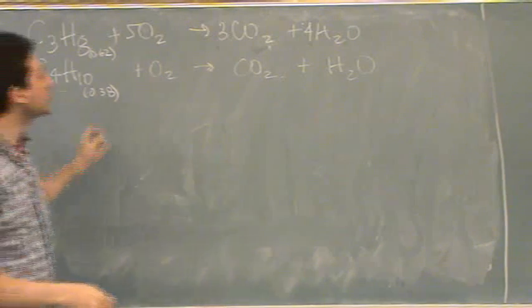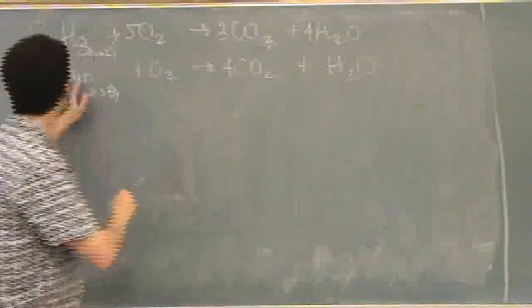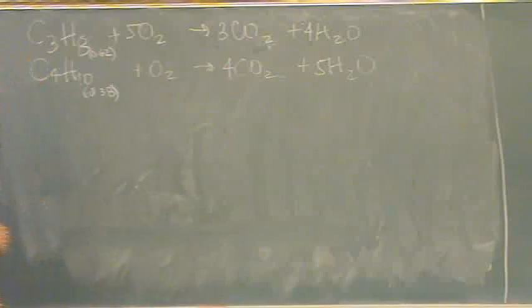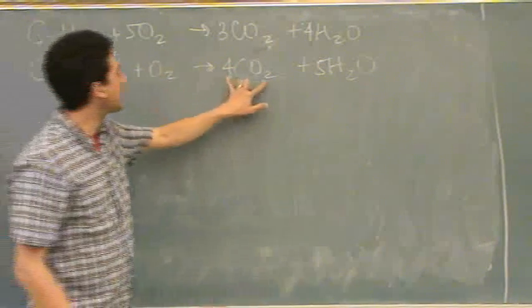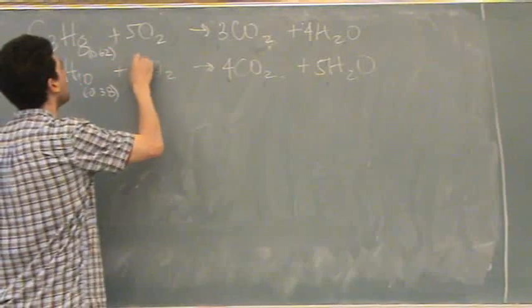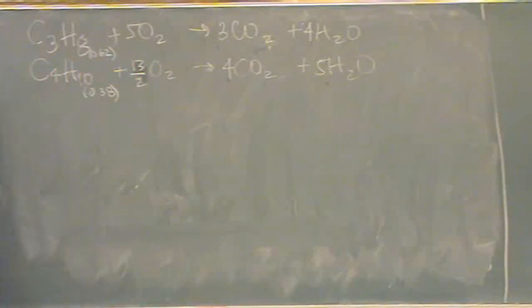Now, this is the second one. There's 4 carbons here, so put 4 here. 10 hydrogens, so we've got to put a 5 there. This is, 4 times 2 is 8, plus 5 is 13, so 13 halves. Okay, now we've got everything balanced, that's nice.